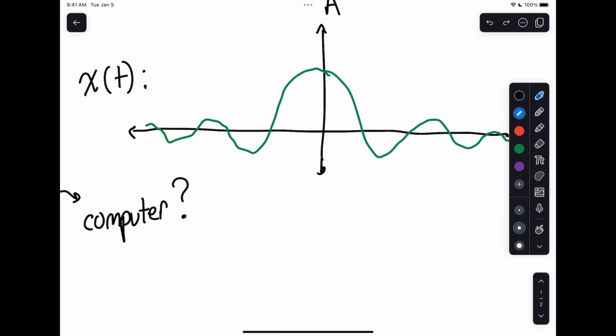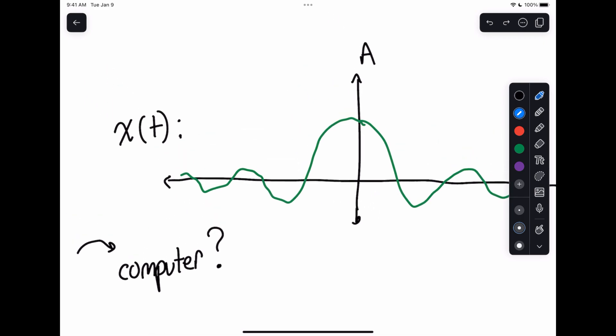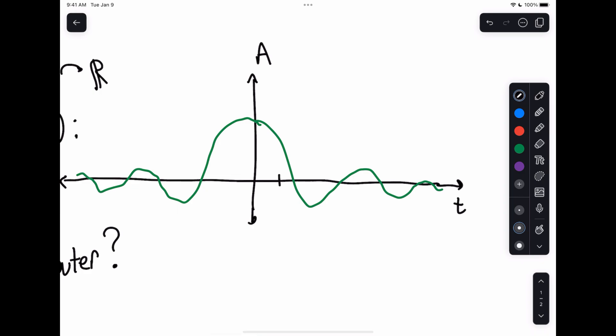The first problem comes about when we look at our time index. Notice how when we have a function of a signal, we're going from some function of a real valued function. This is R. Usually we get something that's also in the reals, which is a function of your amplitude.